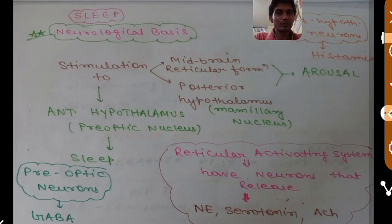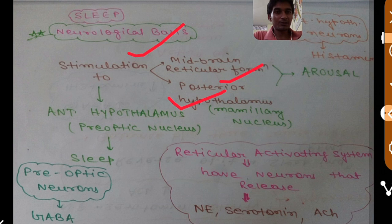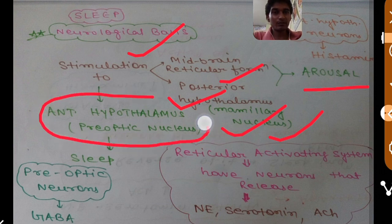We are going to discuss the neurological basis of sleep. There was an experiment performed on an animal: when the midbrain reticular formation area and posterior hypothalamus were stimulated with high-frequency stimulus, it caused arousal of that animal. In the posterior hypothalamus, particularly the mammillary nucleus, stimulation caused arousal, whereas stimulation of the anterior hypothalamus, particularly the preoptic nucleus, induced sleep in that animal.